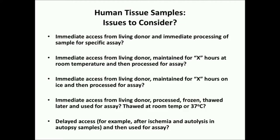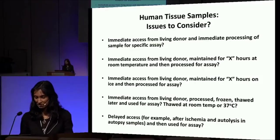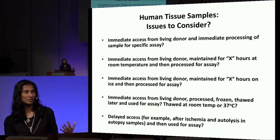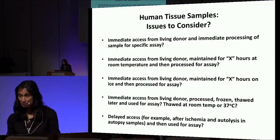There are issues to consider: how to actually access cells and samples from living donors, whether or not we would process them right away, or whether they could sit for a while at room temperature or on ice, whether we could freeze and thaw them and look at everything in bulk, and whether the freeze-thaw process would have an effect on T cell subsets. We also looked at autopsy samples — that didn't work out well for immune cell subsets because of issues with ischemia and tolysis.